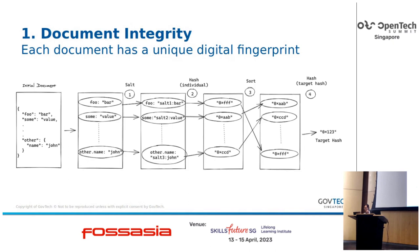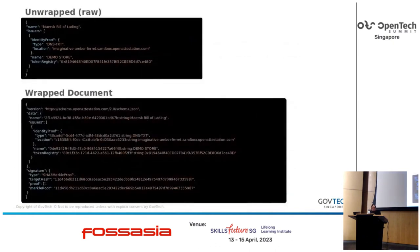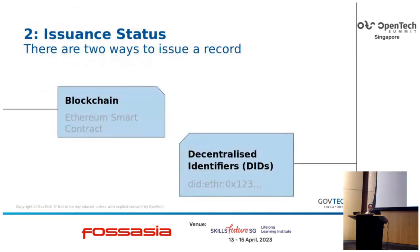After performing the wrapping process, the document properties have been sorted and we now have a target hash that represents our document. Now that we have a way to wrap the document, we need to verify that it was issued by the issuer.